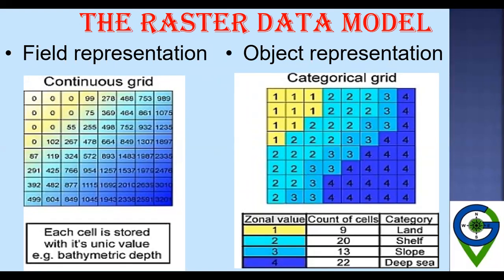In raster data models, there is field representation and object representation. In field representation, grids are continuous and each cell is stored with its unique value — for example, bathymetric depth. In object representation, values represent zones such as 0 for land, 1 for shelf, 2 for slope, and values above 1000 for deep sea. Zonal values also show the count of cells — for instance, a 3x3 grid has 9 cells.